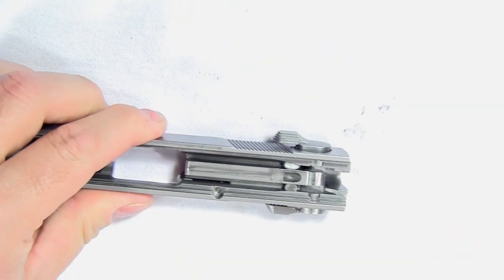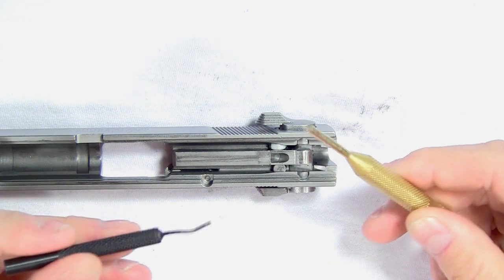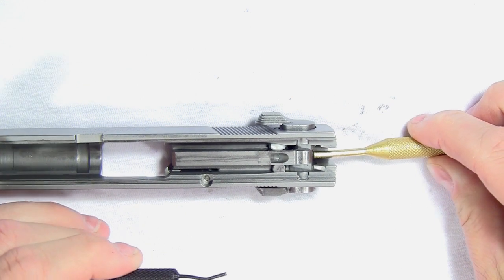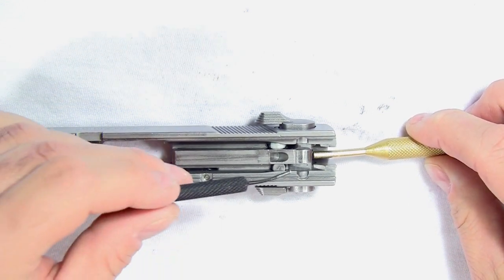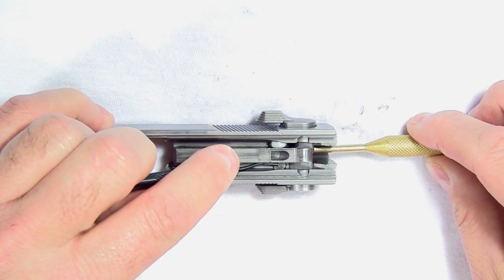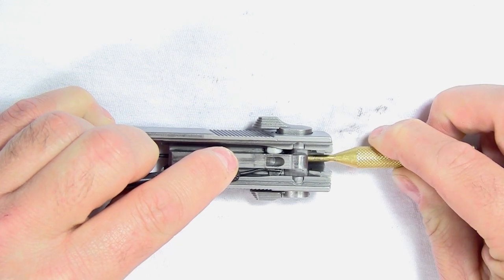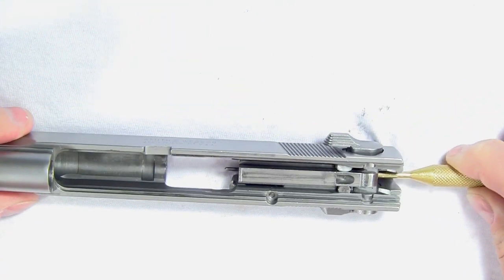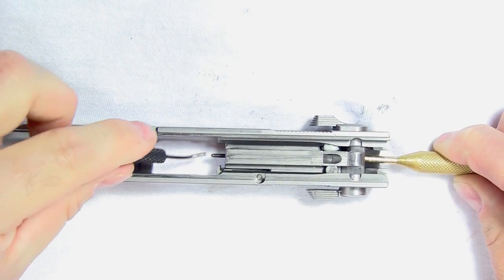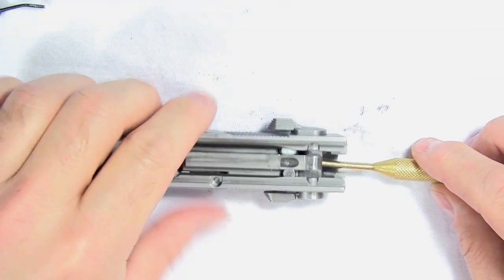Grab a couple of punches. Use the brass punch to push in the firing pin while holding down the firing pin safety. Just depress that button and push in the firing pin all the way, then release it. You can see the firing pin sticking out through the breech face. Once you release the firing pin safety, it'll hold it in place.